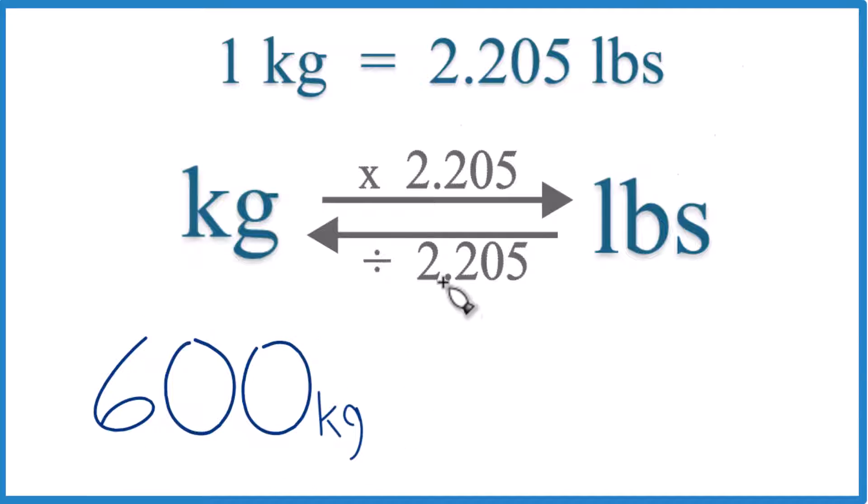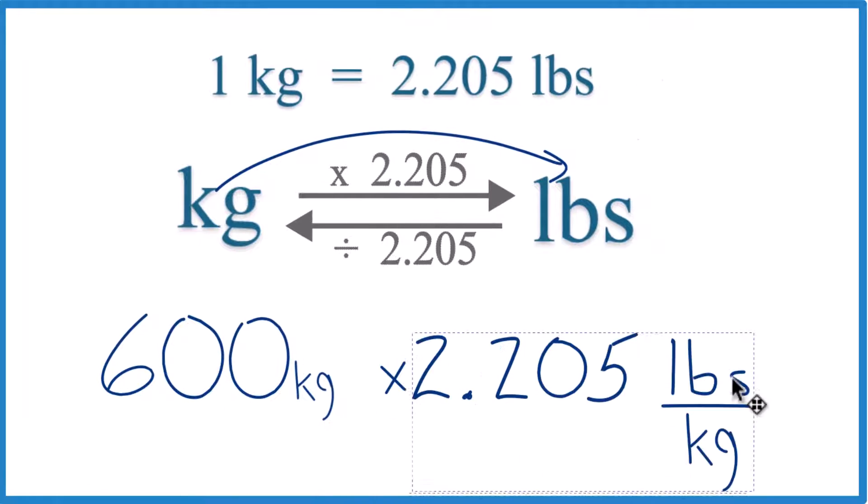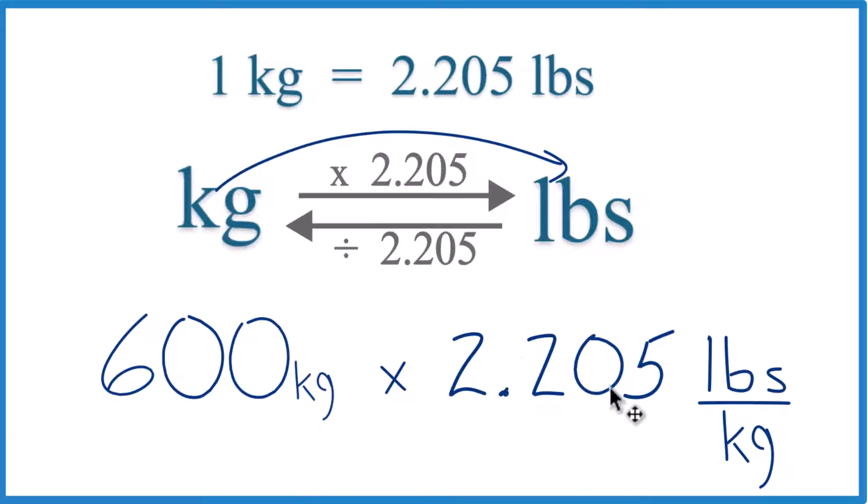So we have 600 kilograms, we want pounds, we're going to multiply by 2.205. That's the conversion factor. And it's 2.205 pounds per kilogram. That comes from our conversion factor here.